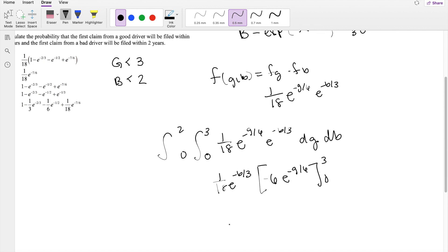I'm going to throw that negative 6 outside, and you get negative 1 over 3, e to the negative b over 3 on the outside. Plugging in 3 here, you get e to the negative 1 half minus, when I plug in 0, you just get 1.